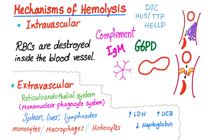In the last video, we discussed extravascular hemolysis — quick review. The reticuloendothelial system, i.e., the mononuclear phagocyte system, includes the spleen, liver, and lymph nodes. The cells that attack the red blood cells are mainly macrophages. Extravascular means hemolysis occurs in the reticuloendothelial tissue. The lab results somewhat unique to extravascular hemolysis are increased lactate dehydrogenase, increased unconjugated bilirubin, and low haptoglobin.